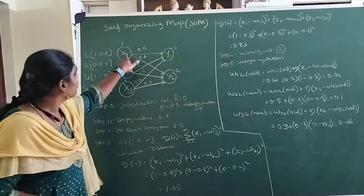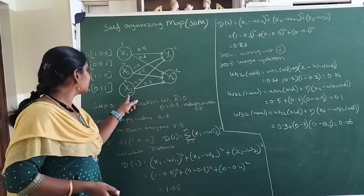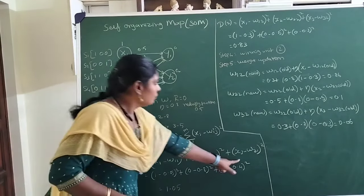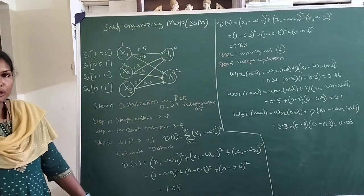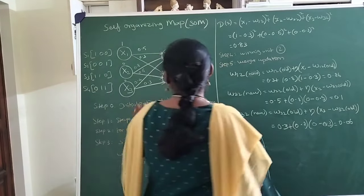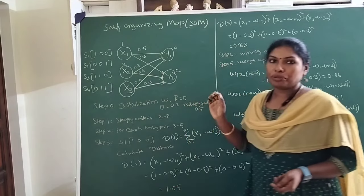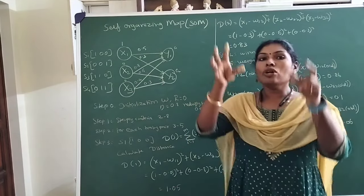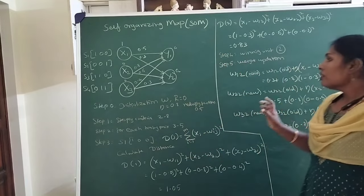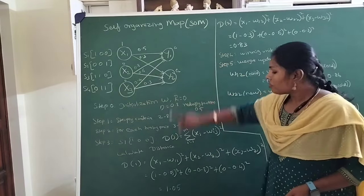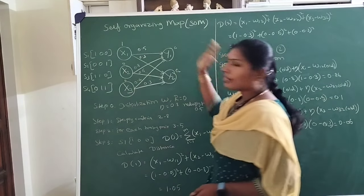So it is x1 minus w11, x2 minus w21, and x3 minus w31. Applying the formula, I get the distance value of 1.05 for cluster C1. Similarly, I have to calculate the distance between the presented input pattern and cluster C2. Since I have to calculate the distance between all clusters and choose the one with the minimal distance as the winning unit — for the first cluster the distance is 1.05.